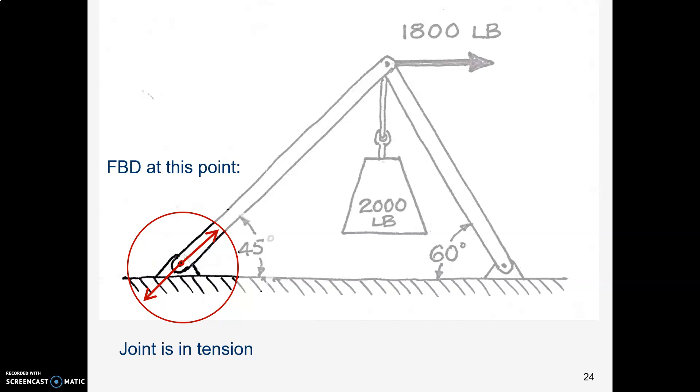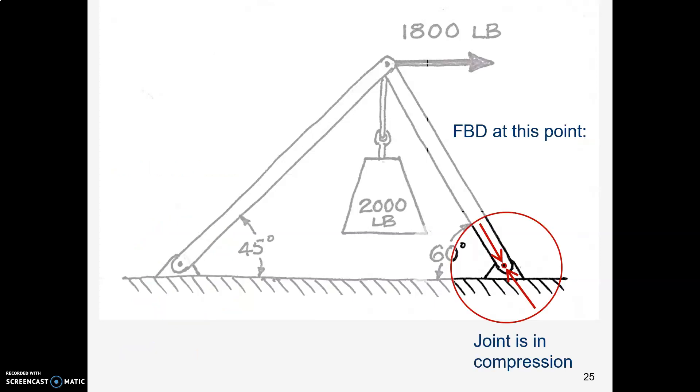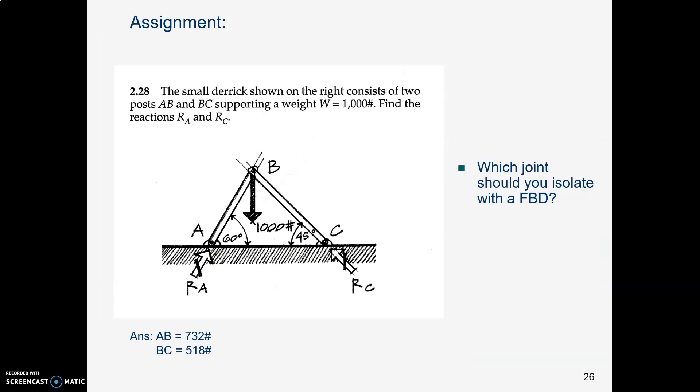So here's a free body diagram of that one joint of the bar in tension. That's what it would look like down there. Here's a free body diagram of the other joint that's in compression. Here's what it would look like down there. And the reason for going through all that is because of the way our book words this problem. Find the reactions at A and C.